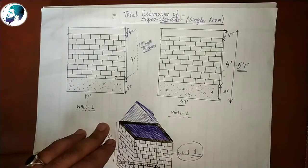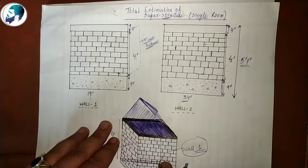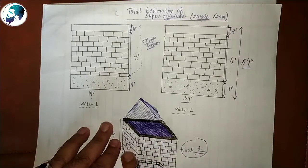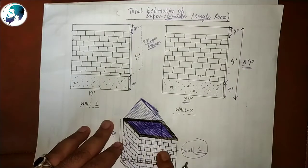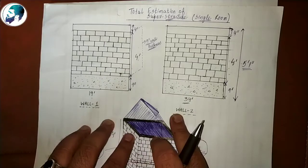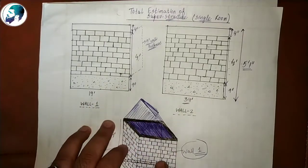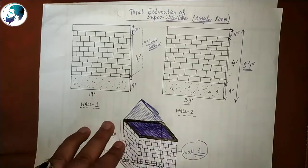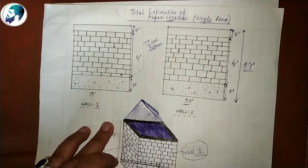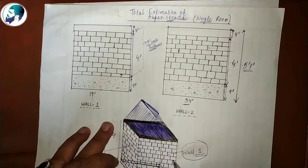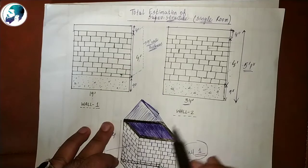This is my room. I don't add a door here — obviously there will be a door or some window. I will later on tell you what you have to do for door and window. This is my rectangular room having dimensions 19 feet by 34 feet. This is wall first — 19 feet — and wall second — 34 feet.